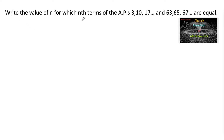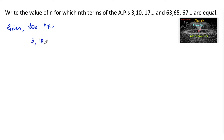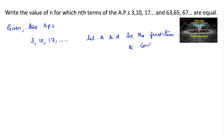Write the value of n for which the nth terms of the two APs 3, 10, 17, and so on and 63, 65, 67, and so on are equal. So given two arithmetic progressions, the first one is 3, 10, 17, and so on. Let us consider 'a' as the first term and 'd' as the common difference respectively.